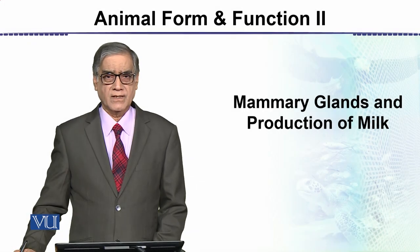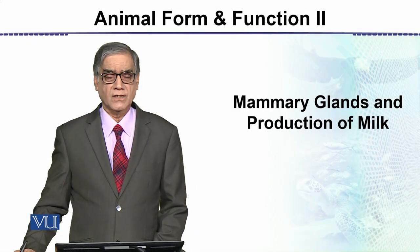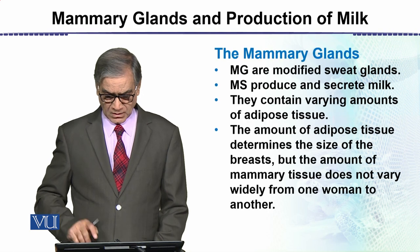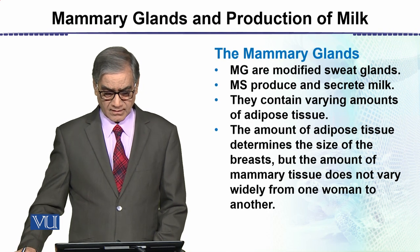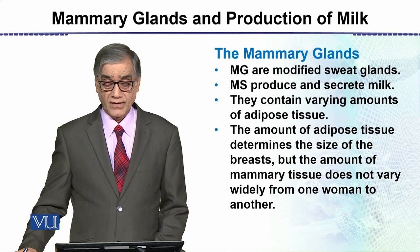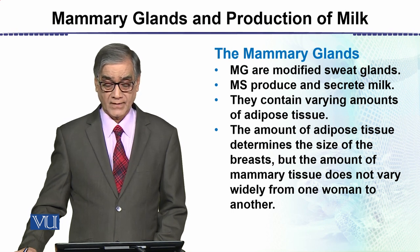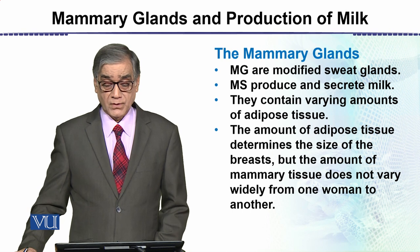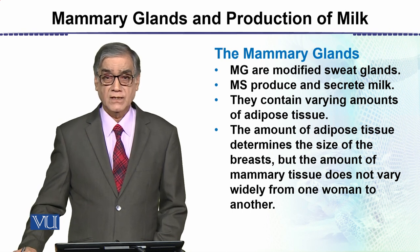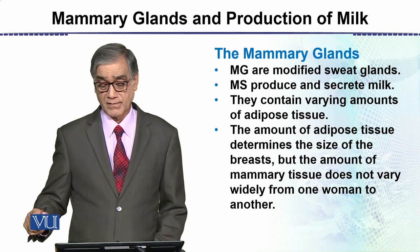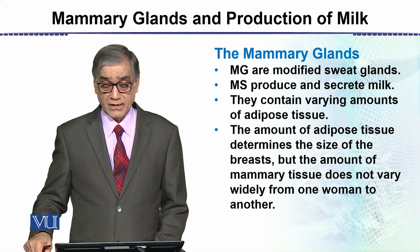Next topic is the mammary glands and the production of milk, taking the human as an example. The mammary glands are in fact modified sweat glands. They produce and secrete milk — these are two different processes: production of milk and secretion of milk.